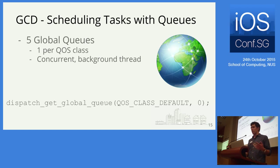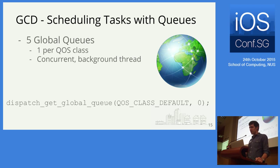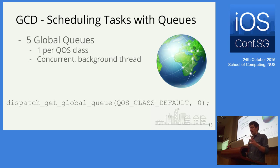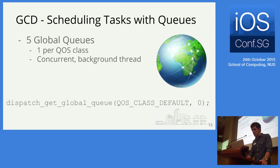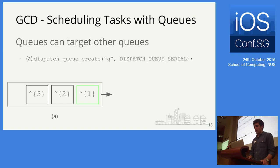If you don't want to create a queue yourself, GCD provides five global queues — one per quality of service class. Each is a concurrent queue that runs tasks on background threads. To get one, call dispatch_get_global_queue, passing the desired QoS class and zero.